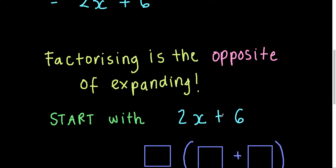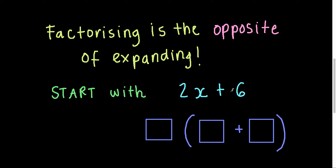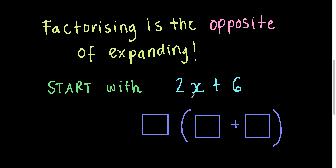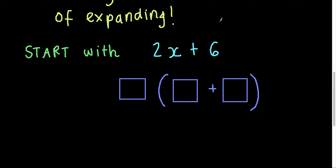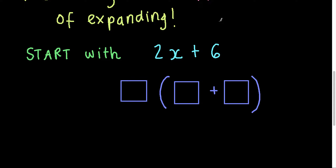When we factorize, we start with an expression that doesn't have brackets — for example, 2x plus 6. We've got two terms, and what we want to do is rewrite this so that it does have brackets. Why would we do this? Well, there are lots of reasons. Further along in your mathematics journey, it might help with graphing — for example, finding an x-intercept. We also need to be able to identify when two expressions are the same, and we can do that by factorizing to see if two things are equivalent.